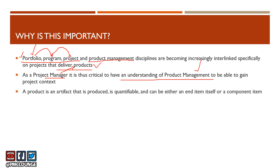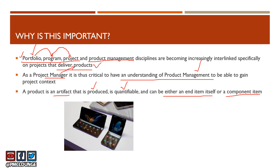What is a product? A product is an artifact. It is produced, it is quantifiable, and it can be either an end item itself or a component item of a larger product. For example, you have phones here — these are folding phones. This is known as the Samsung Fold, and this is known as the Samsung Flip. As you can see, these are products.